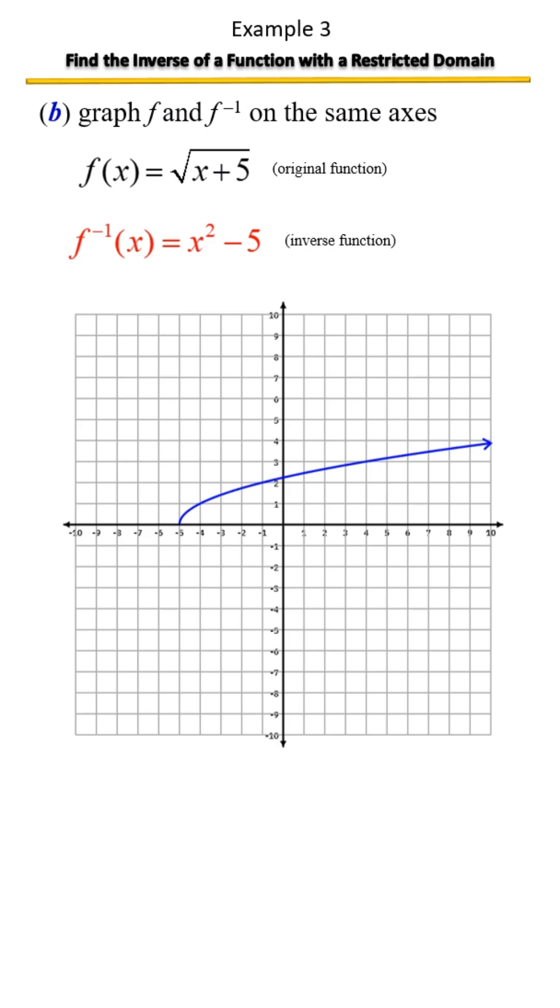And now we're going to sketch the inverse. This inverse is the parent function, the quadratic function that has been shifted 5 units down. Now normally the domain would be all real numbers from negative infinity to positive infinity.